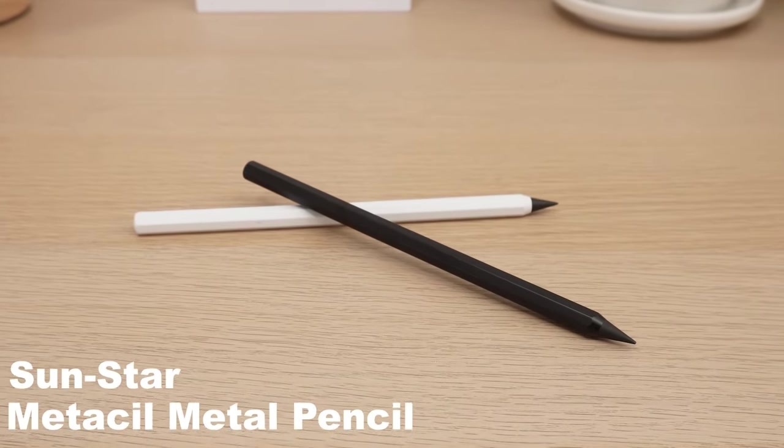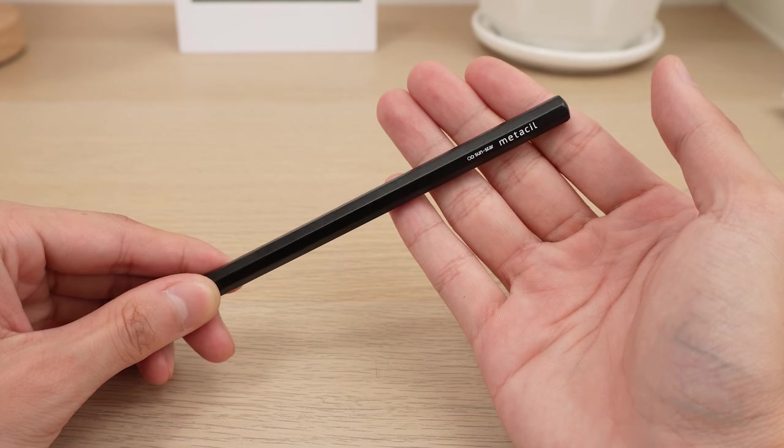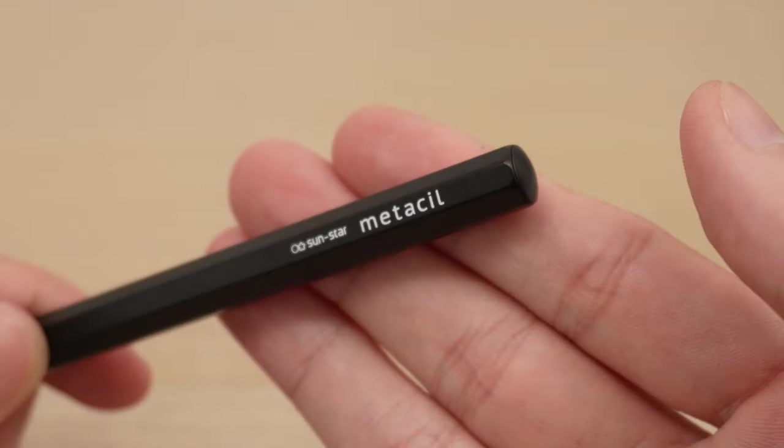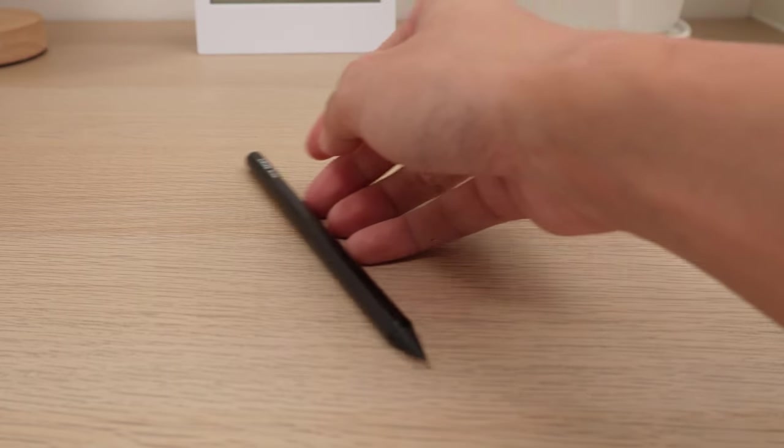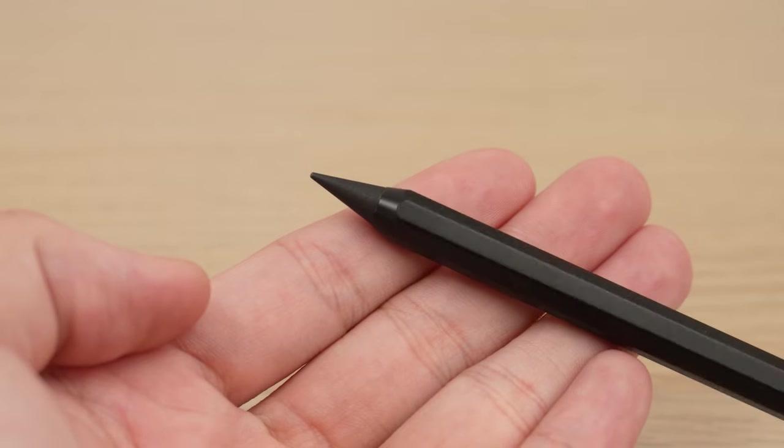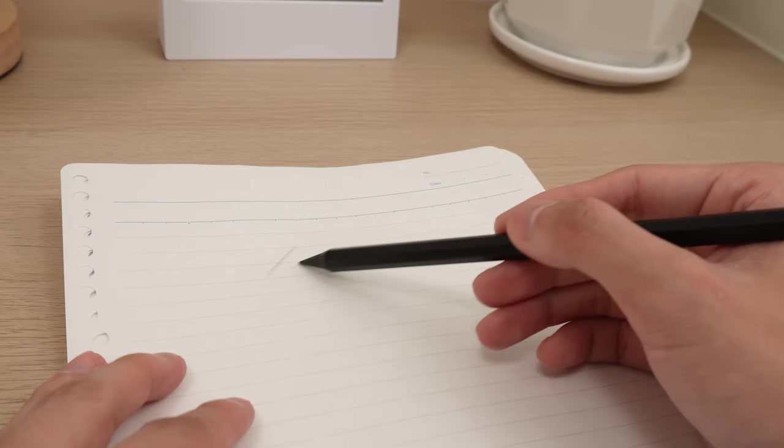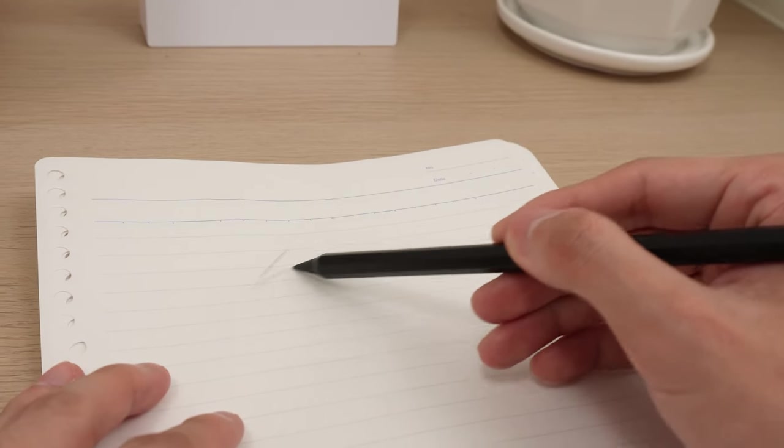The Sunstar Metasol Metal Pencil is next, ideal for drawing and writing. Its aluminum body provides a sturdy grip, and its octagonal shape prevents it from rolling off tables. The unique graphite and metal tip means no messy pencil shavings. You can write or draw for a long time without needing to sharpen it, helping you stay focused on your work.